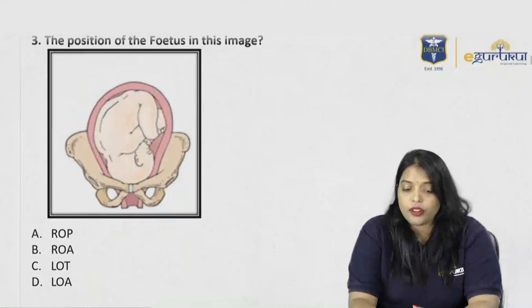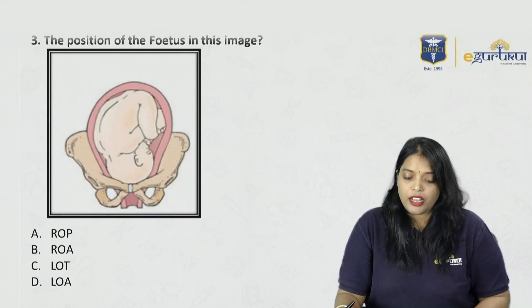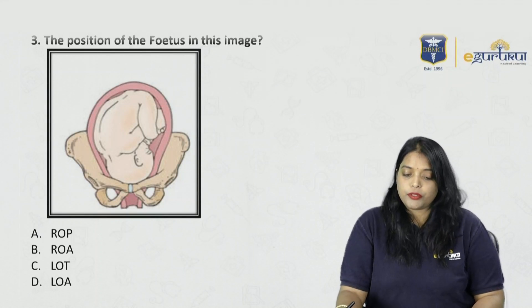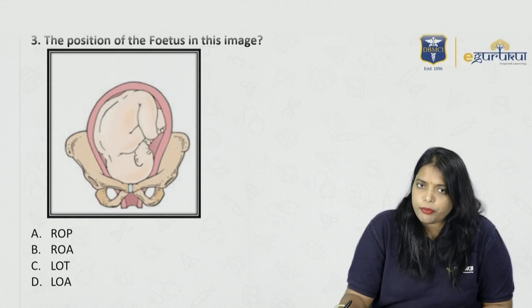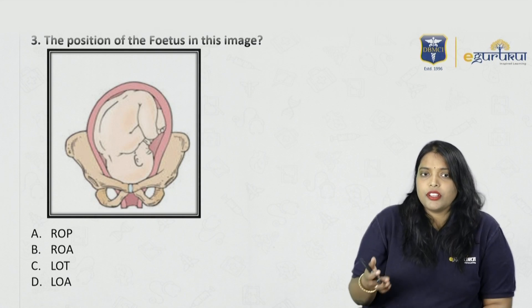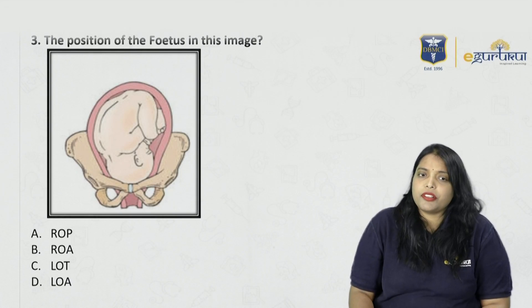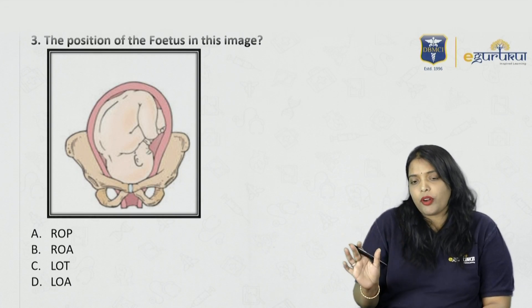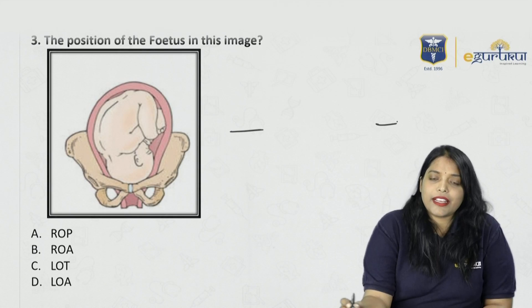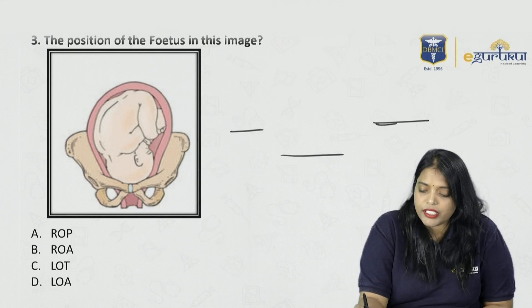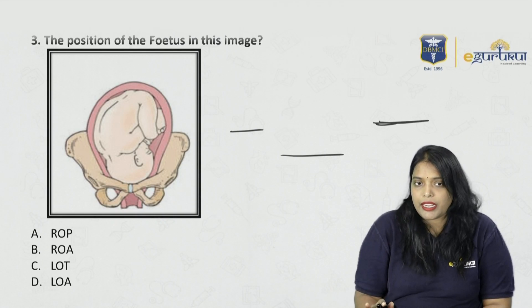This is one of the previous year questions — how to tell the position of the fetus from this image. I have already posted one video on position, so I will be a little quick here. For position, always remember three things are important: one, whether it is right or left side; second, what is the denominator; third, whether it is anterior or posterior.